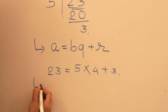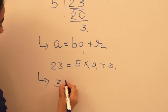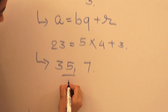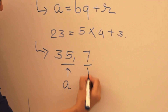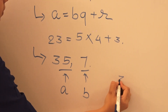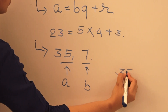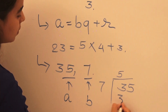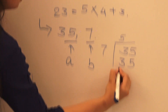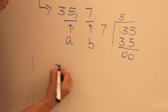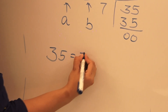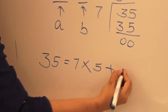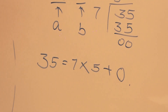Let us take another example. Here I am taking 35 and 7: a is equal to 35 and b is equal to 7. Let us divide 35 by 7: 7 fives are 35, remainder 0. As per Euclid's Division Lemma, I can write 35 is equal to 7 multiplied by 5 plus 0.